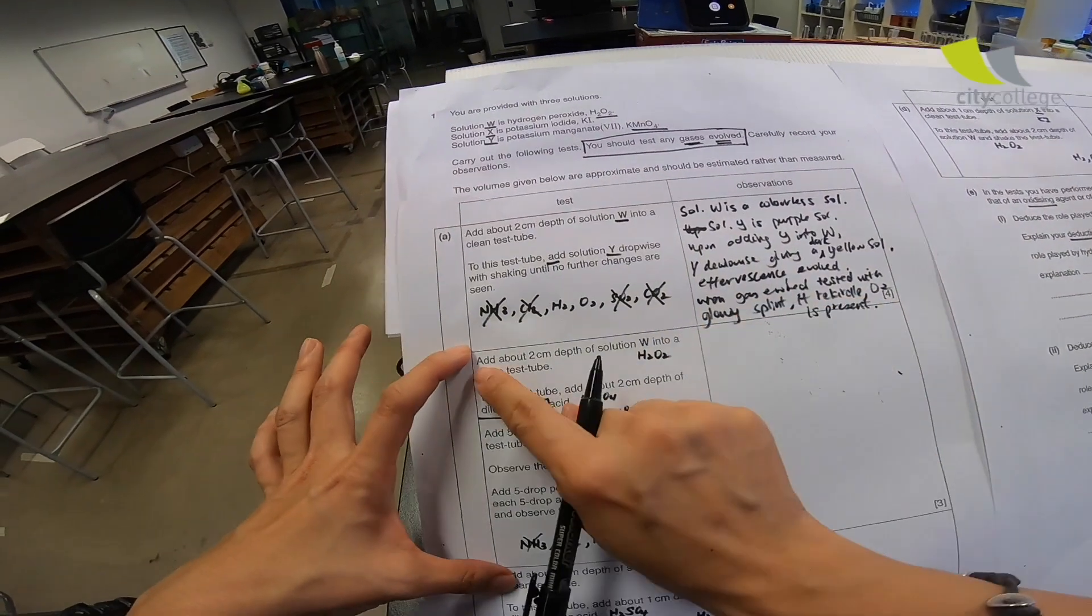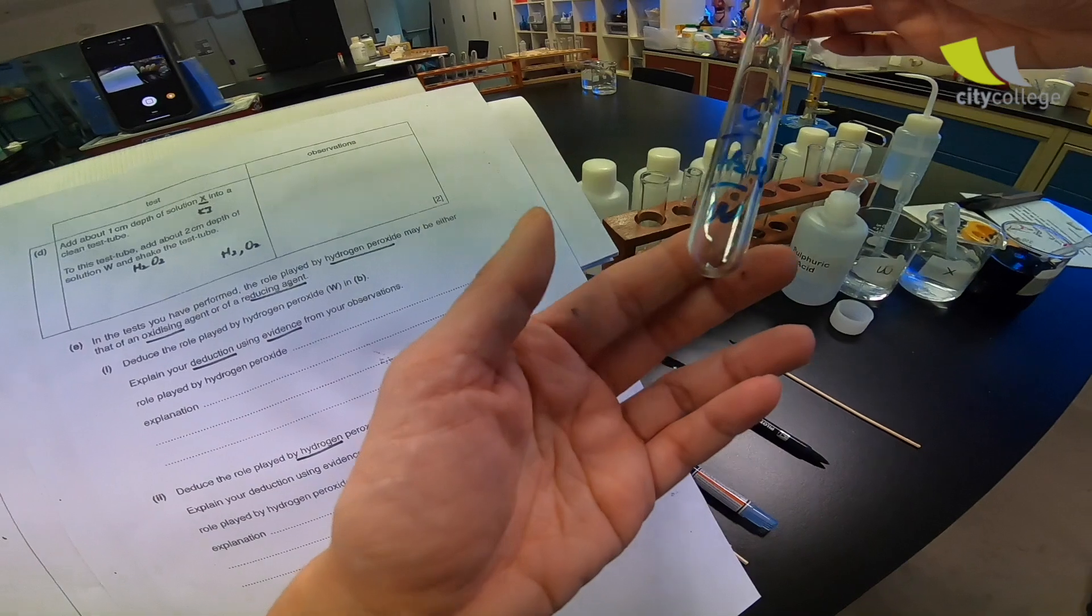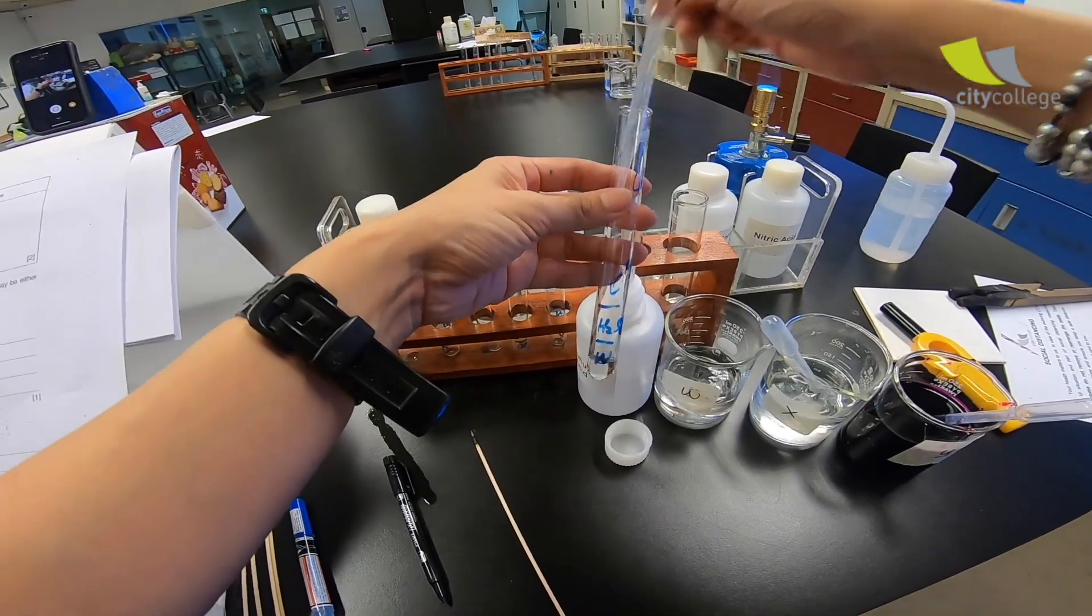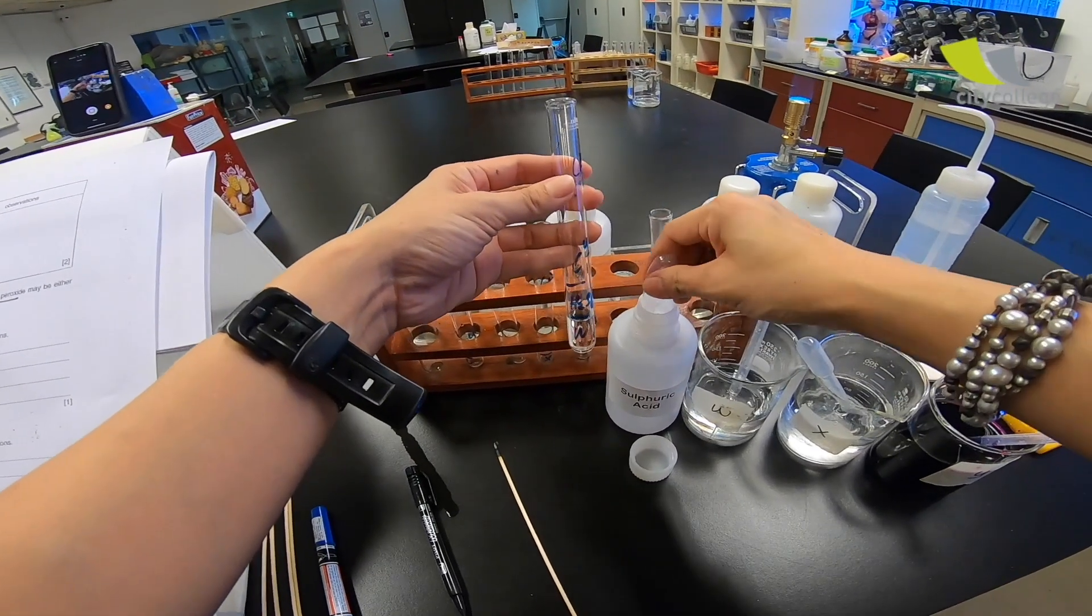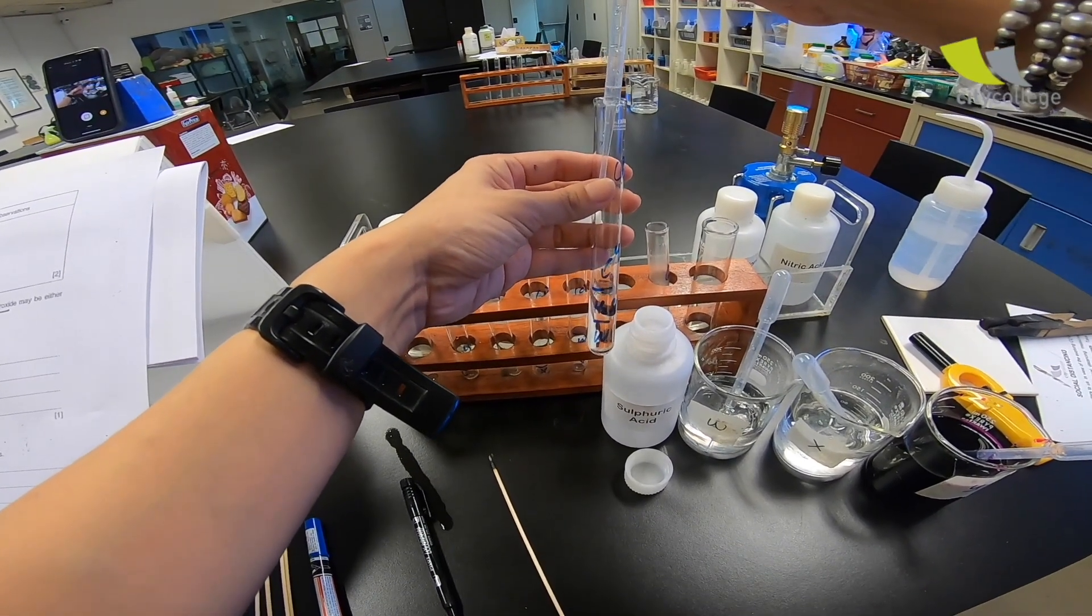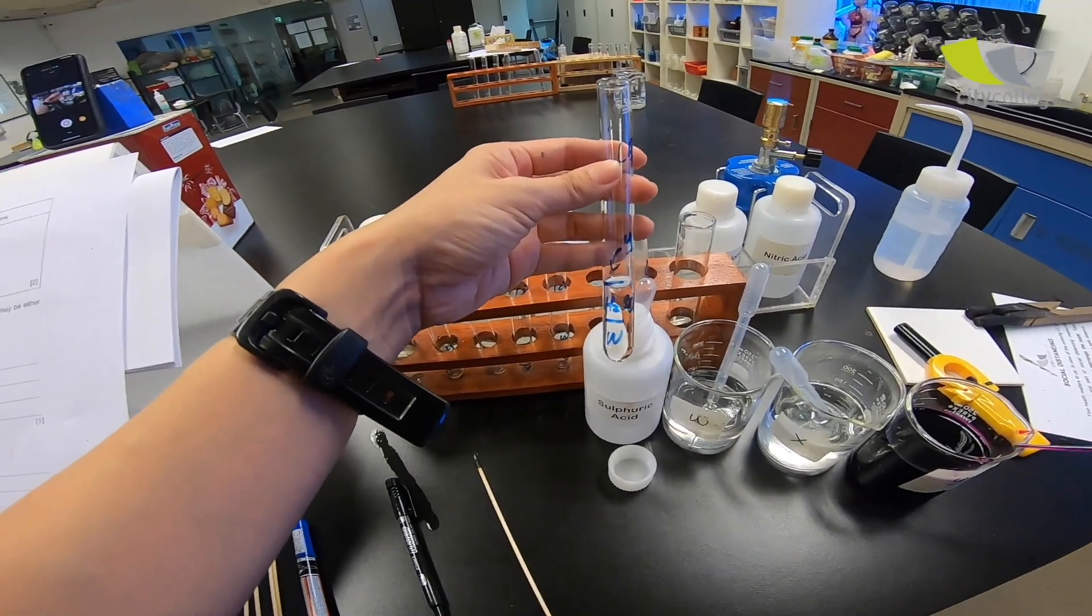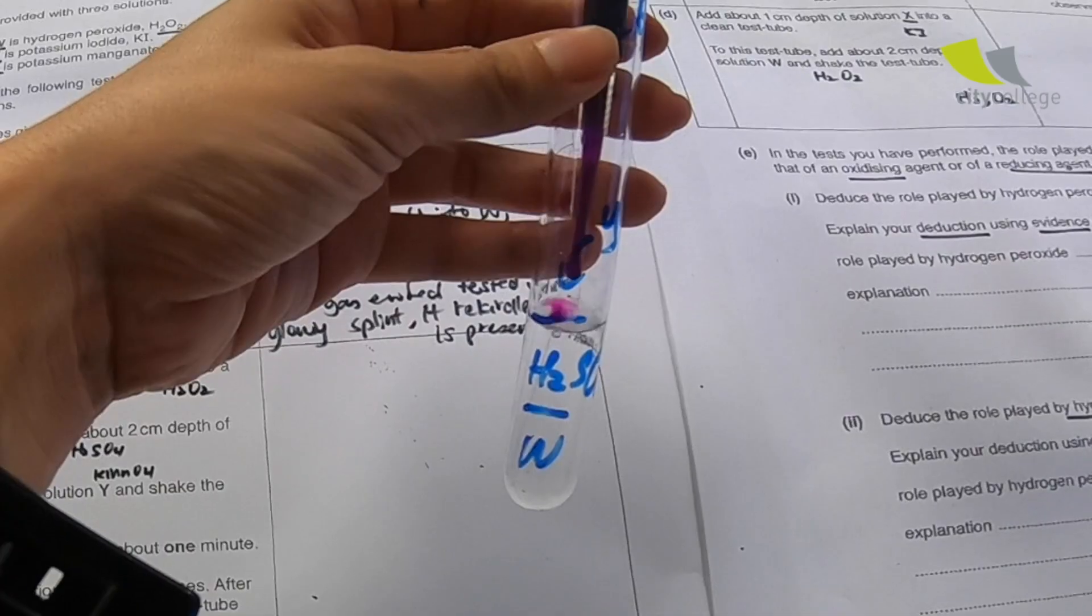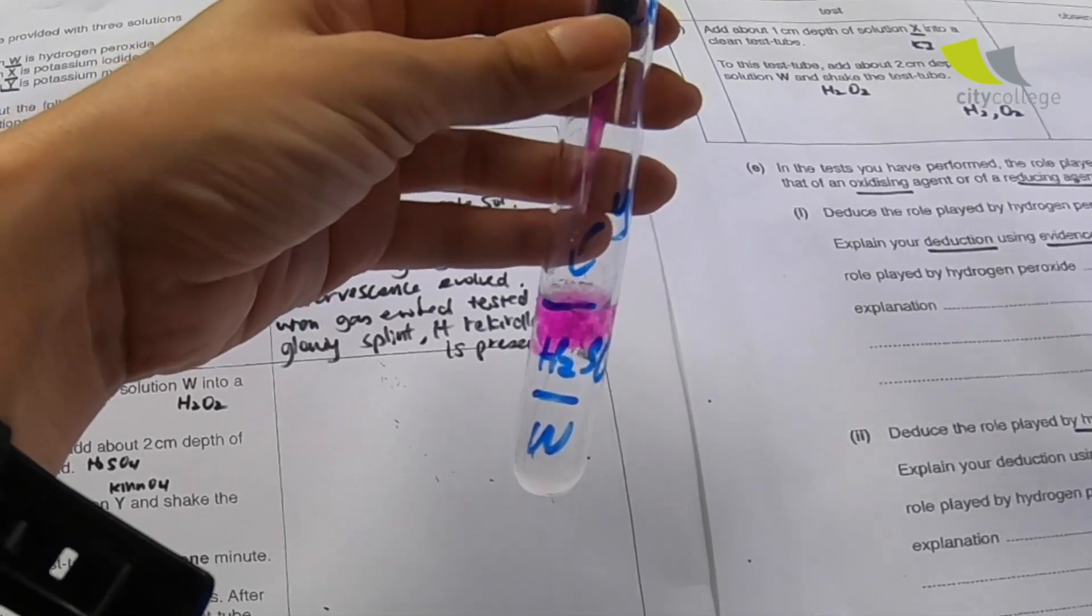Add about 2 cm depth of solution W into a clean test tube. Now, I have all the marking here, so I just need to follow the marking at W. Followed by H2SO4. Follow the marking. Then, they say add Y. In this part here, the Y is 5 drops. So, dropwise. 1, 2, 3, 4, 5. Shake.